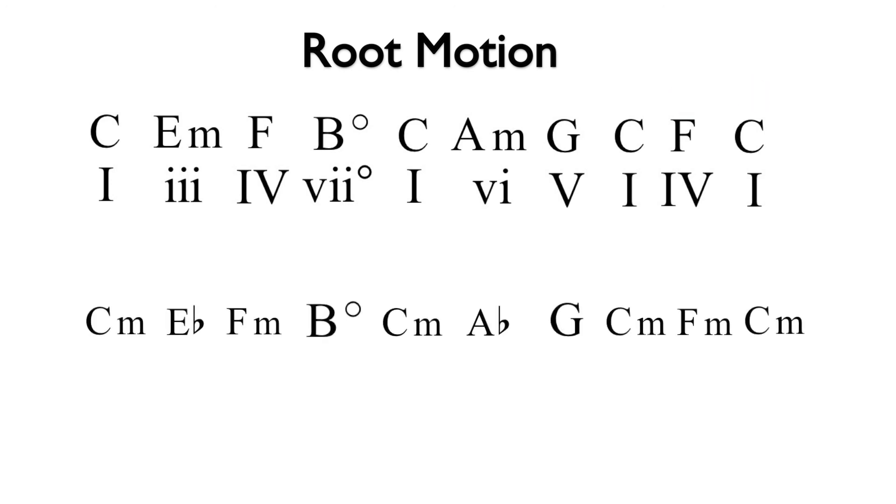Here is the equivalent progression using the common chords in minor: minor i, major III, minor iv, vii diminished, minor i, major VI, major V, minor i, minor iv, and back to minor i. Here is the sound of that progression.